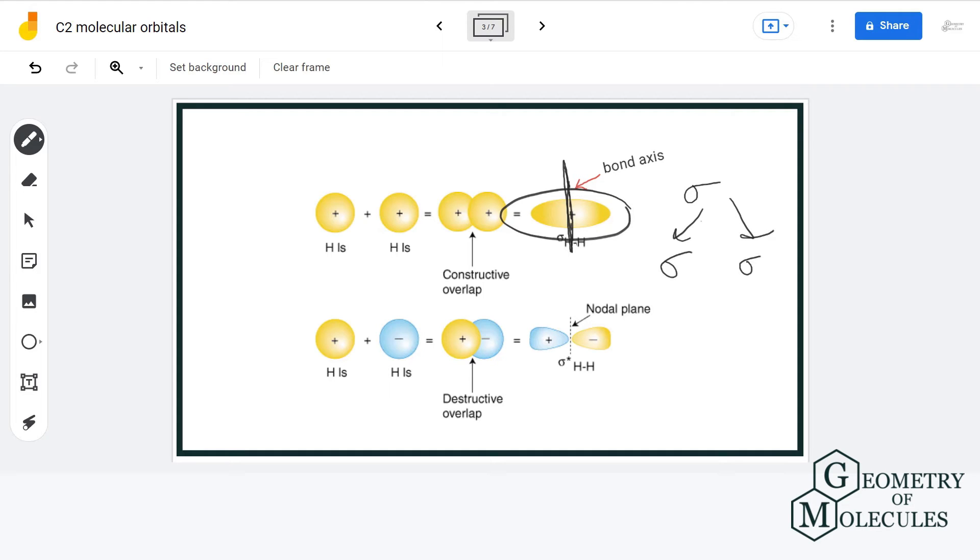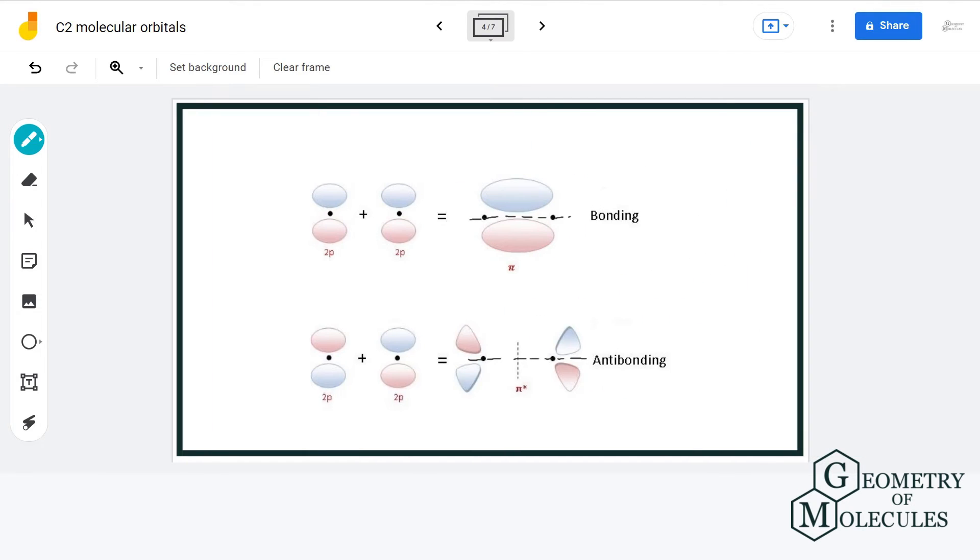There will be two types. One is sigma and the other is sigma star. Sigma bond will be formed when there is constructive overlap of atomic orbitals and sigma star will be formed where there is destructive overlap of atomic orbitals.